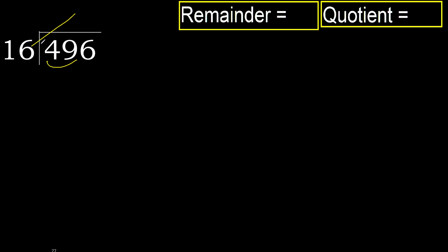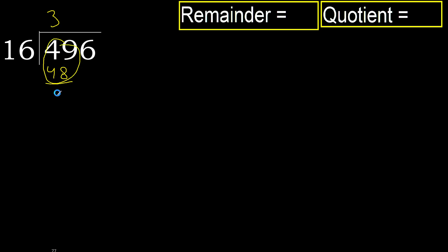16 multiplied by 4 is 64 — that is greater. Multiplied by 3 is 48. 48 is not greater. Subtract: 49 minus 48 is 1.